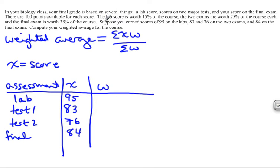Now we have to figure out what the weights were. So the lab score is worth 15% of the course, so change your percent into a decimal. The two exams are each worth 25%, so we'll change both of those. And then the final exam is worth 35% of the grade.